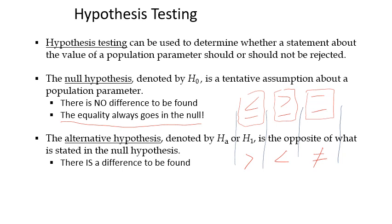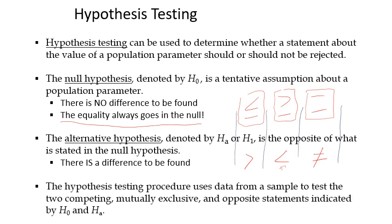Those are the only three combinations you can have for null and alternate hypotheses when talking about signs. What we're looking at when doing hypothesis testing is using our data from our sample to test two competing mutually exclusive — meaning opposite — statements indicated by H₀ and H_A. So one is less than, the other is greater than or equal to — they are mutually exclusive but opposite.